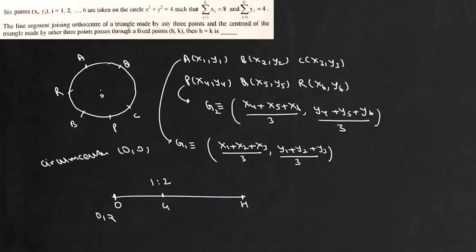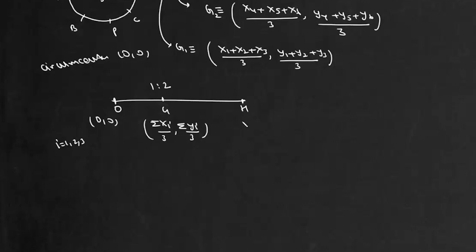Now this is 0, 0, this is summation xi by 3 and summation yi by 3 where i takes the value 1, 2 and 3. Now using section formula, we can find coordinate of this point H and that will be x1 plus x2 plus x3 comma y1 plus y2 plus y3.